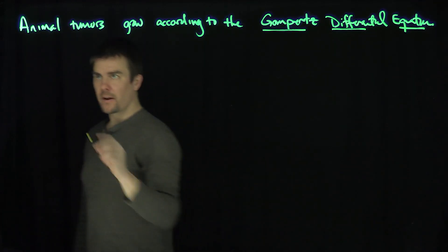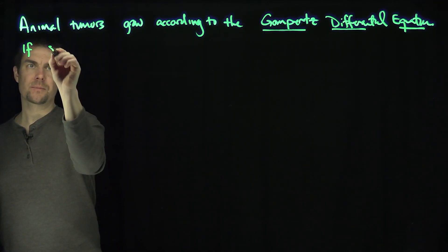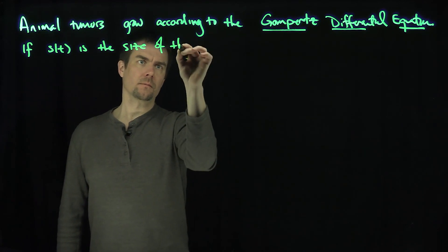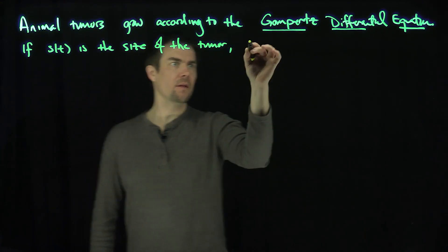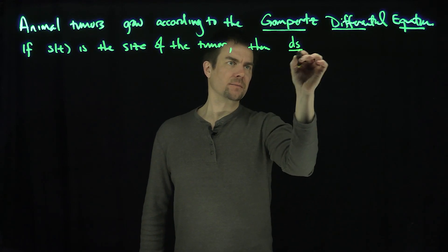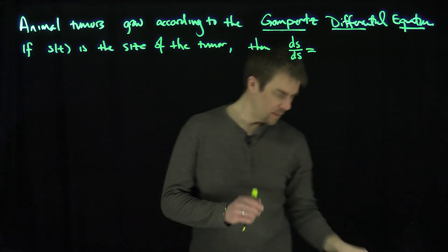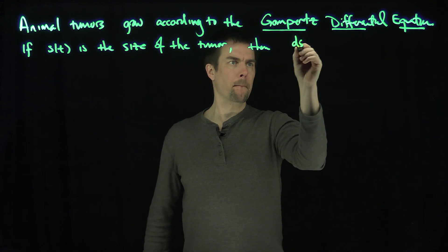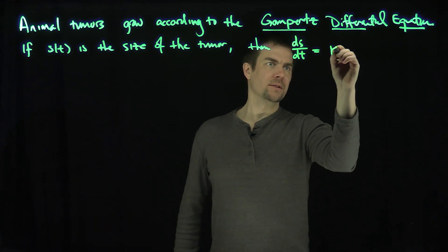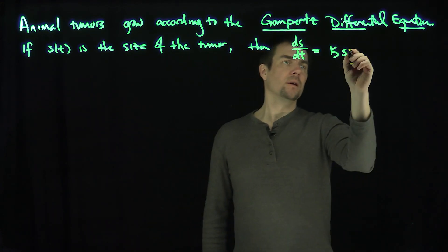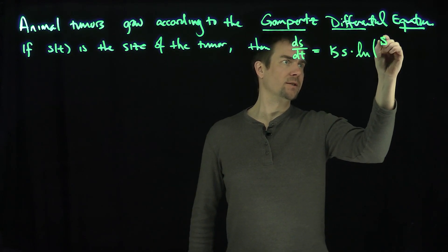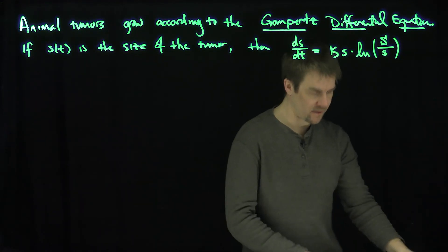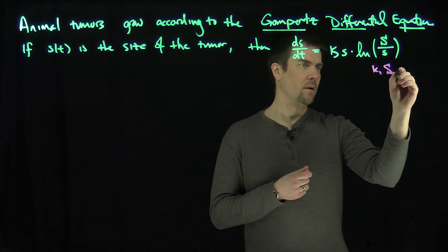In other words, if s represents the size in the right units, then ds/dt is a constant k times s itself times the natural log of some constant S capital over little s, the function itself. Here k and S are constants.